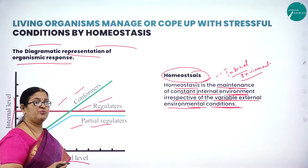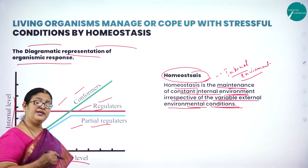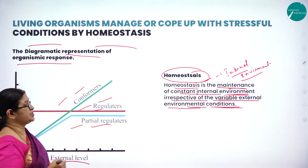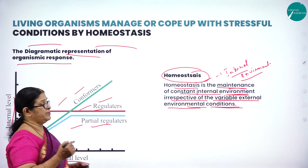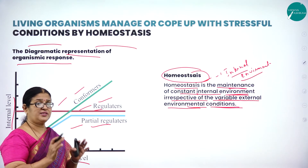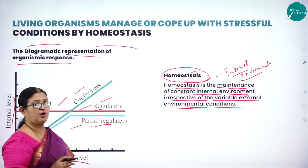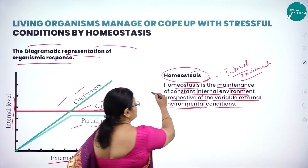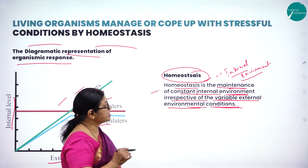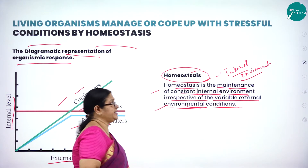Homeostasis is very important for the survival of an organism and for all internal processes to go on in a systematic manner. In our body, many changes happen, but something keeps everything in balance — that is called homeostasis. Homeostasis is the maintenance of a constant internal environment irrespective of variable external environmental conditions.